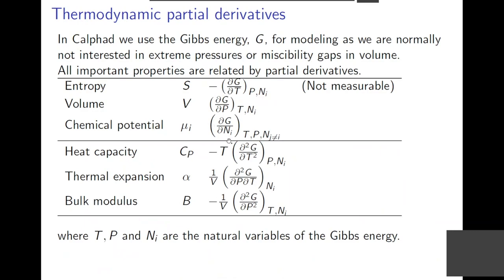This is all controlled by partial derivatives. The negative of the Gibbs energy with respect to temperature is the entropy. The volume is the pressure derivative. The chemical potential is obtained when you differentiate by the amounts. It's always important to check what conditions are kept fixed, because heat capacity will not be the same if you can control the activity of the component.